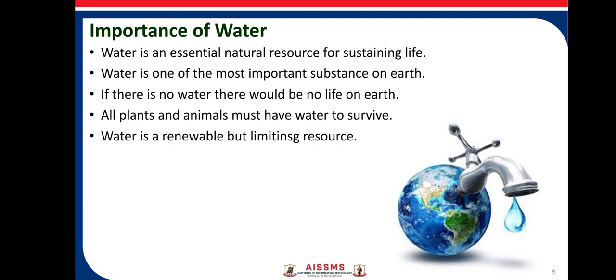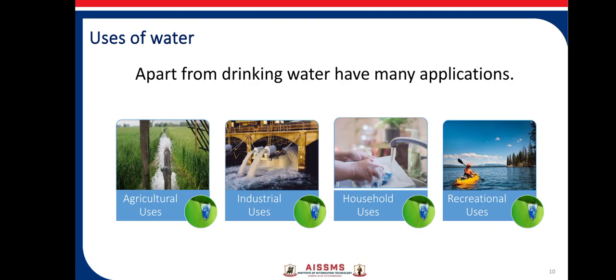Water is renewable but a limiting resource — this is the most important point. Uses of water: apart from drinking, it has agricultural use, specifically irrigation. In industry, water is used as a solvent, coolant, and heating agent. In households, it is used for washing clothes, utensils, bathing, etc. The last use is recreational, for example water parks.